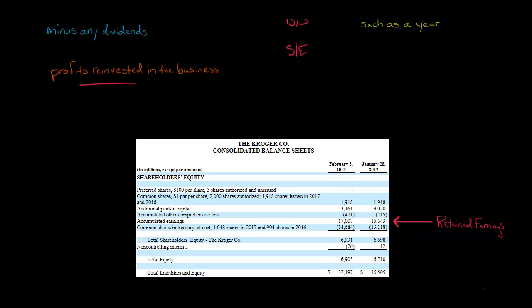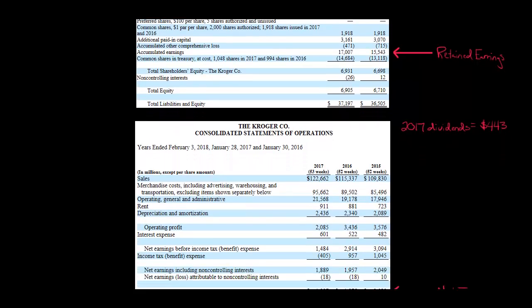Here are comparative balance sheets for two years for Kroger. I've shown just the stockholders' equity section, leaving out assets and liabilities to avoid information overload. Here's their retained earnings account — they call it accumulated earnings, but it's the same account. They started at $15.543 billion and went up to $17.007 billion, and the reason is they had net income over the period.